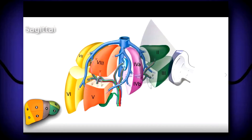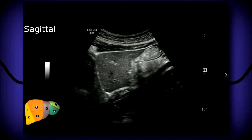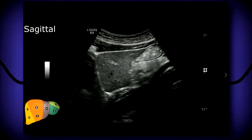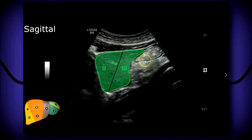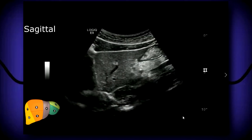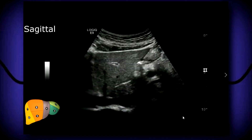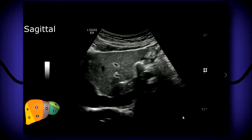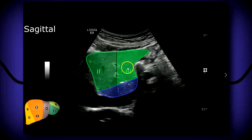With the probe on segments 2 and 3 in sagittal, here you have your aorta with superior segment 2 and inferior segment 3. Moving more medially, you have the IVC, segment 1 (caudate lobe), and again segment 3 and segment 2.